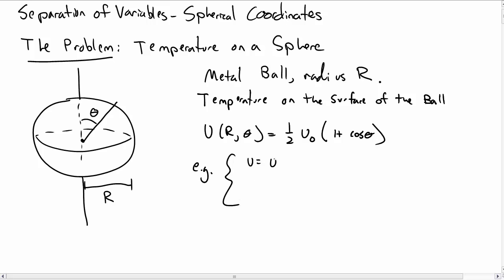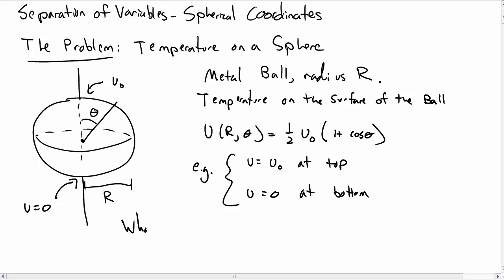You can think about what this means: at the top the temperature should be u₀, while at the bottom the temperature is actually zero. In between those two points on the surface the temperature varies as cosine θ. We want to know what is the steady state temperature inside the sphere — not how it depends on time, but once the temperature settles down.